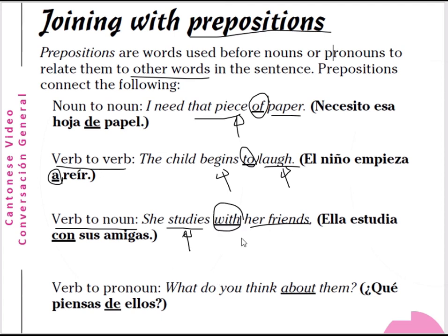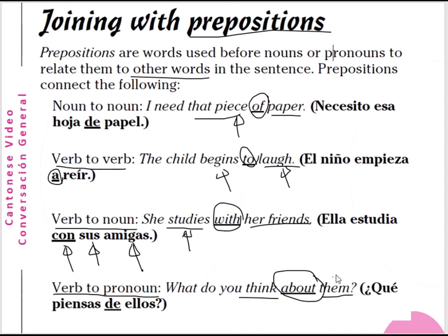We also connect a verb to a noun: 'she studied with her friend' — study is a verb, her friend is a noun, connected by the preposition with — con in Spanish. Ella estudió con su amiga — she studied with her friend. A preposition can also join a verb to a pronoun: 'what do you think about them?' — ¿qué piensa de ellos? De is the preposition of or about. So de ellos means of them or about them.